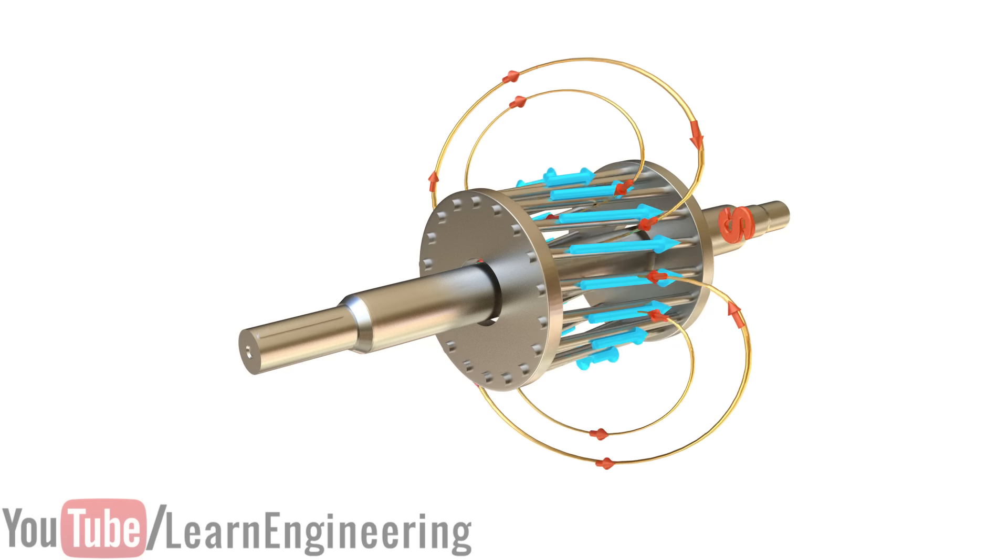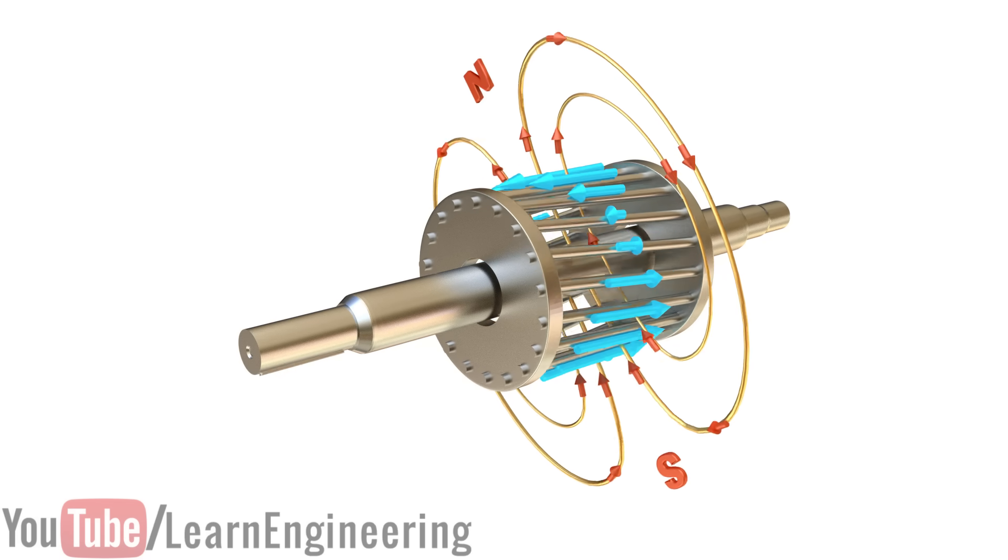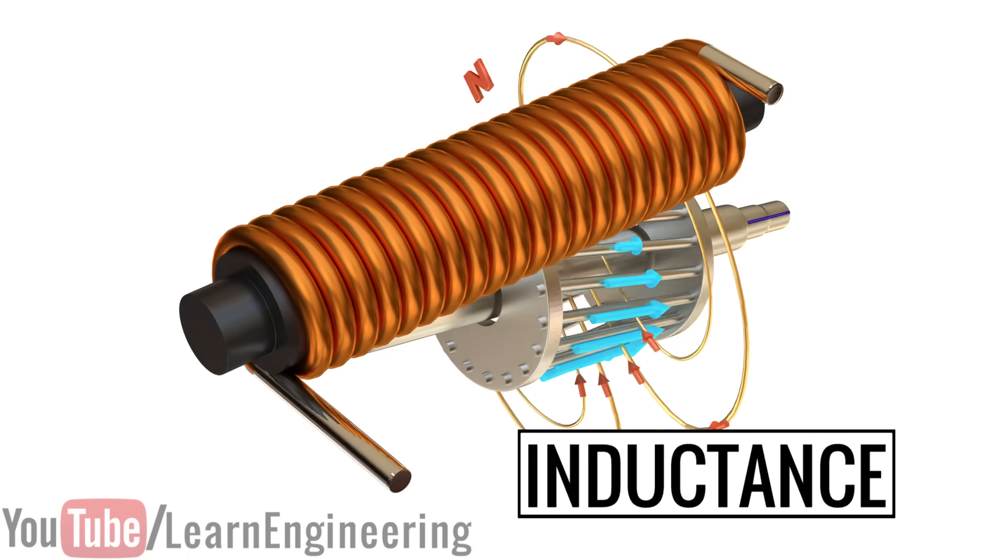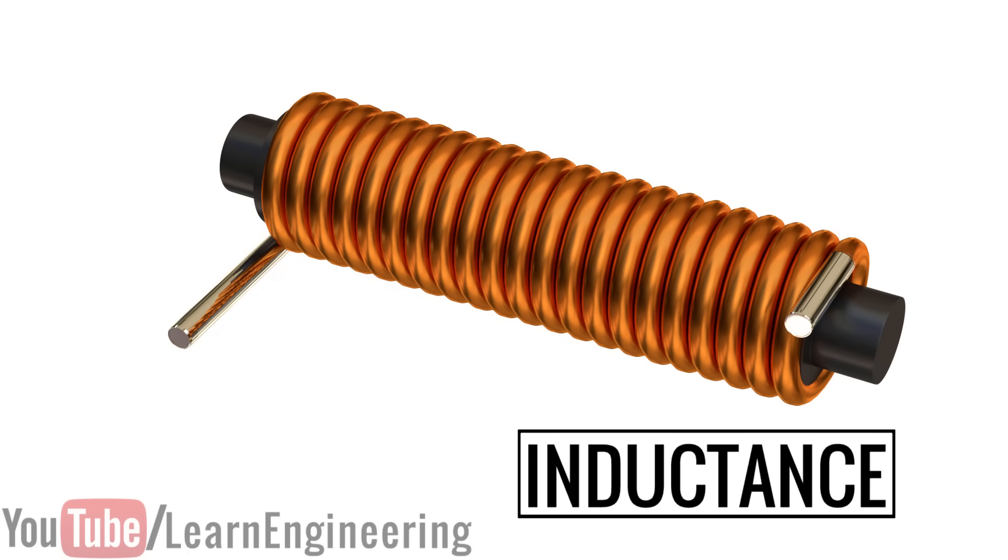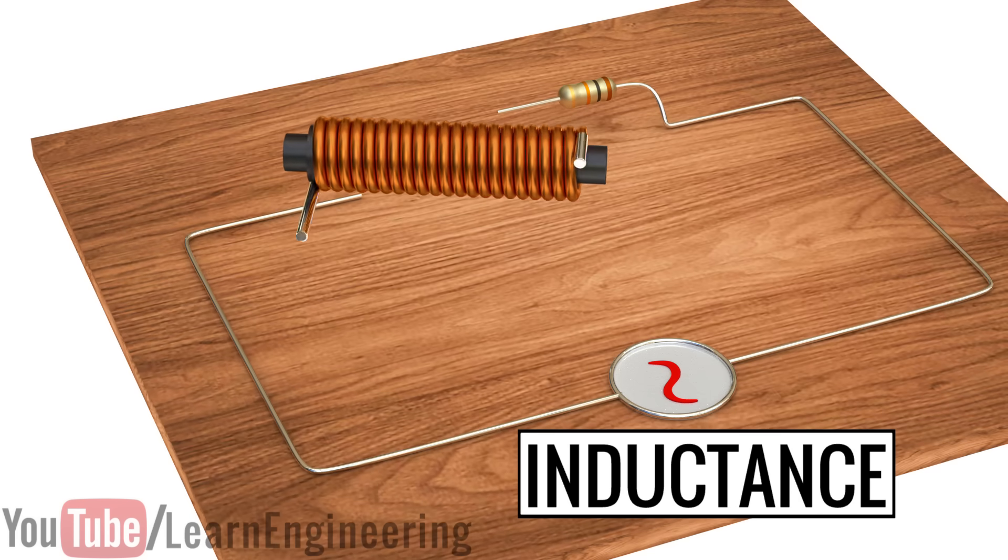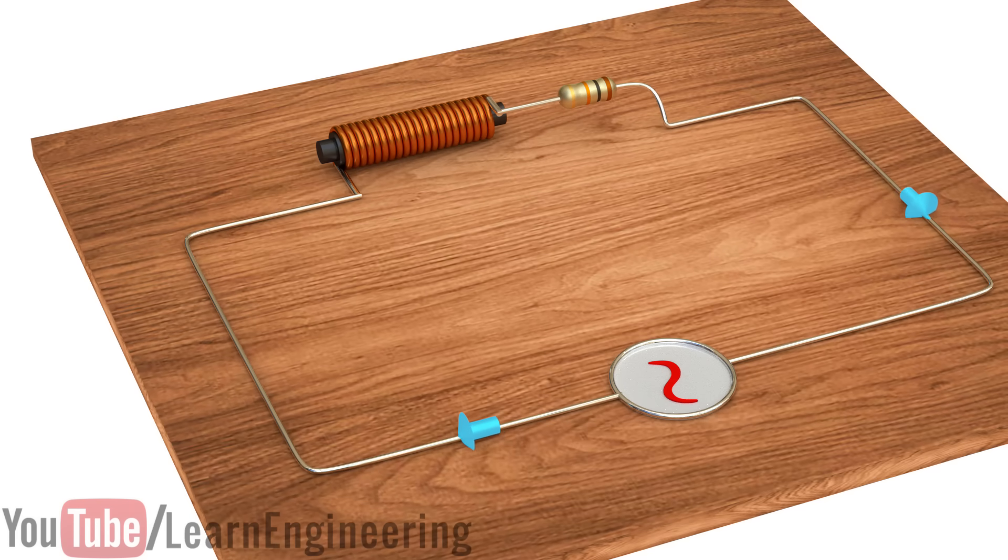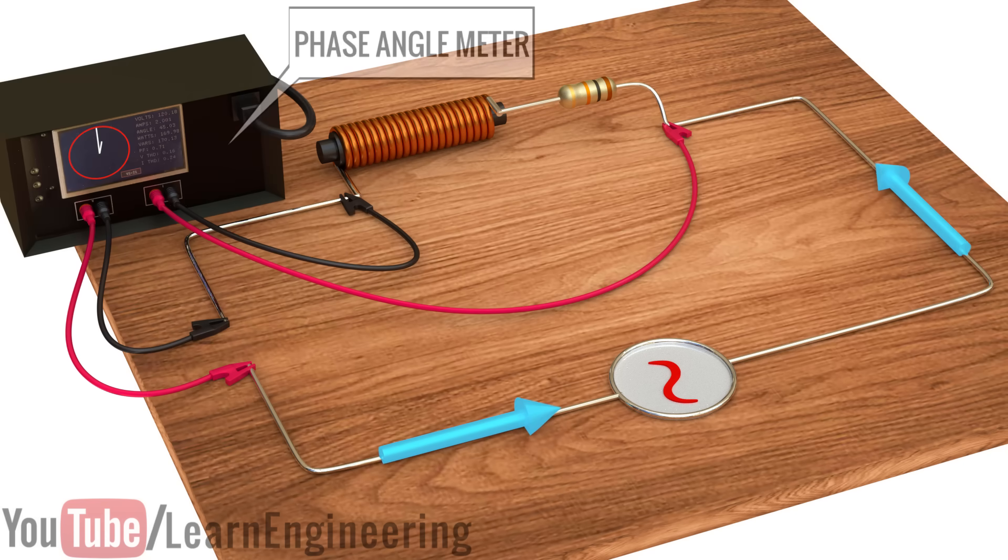This explanation of the way an induction motor works won't be complete without an understanding of the concept of inductance. To understand what inductance is, let's consider a simple circuit. The circuit is a combination of a resistor and an inductor in series, which is connected to an AC sinusoidal voltage.